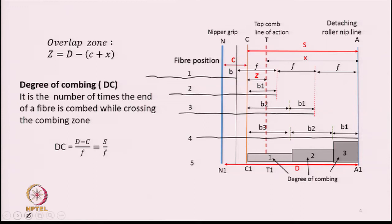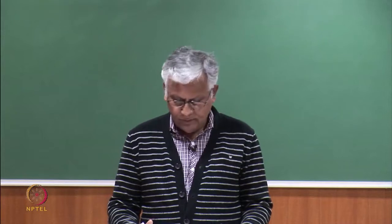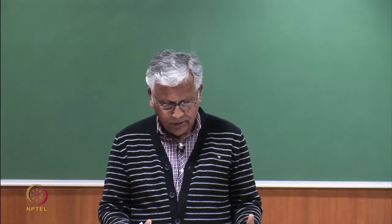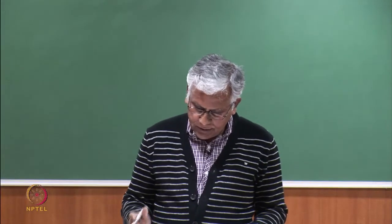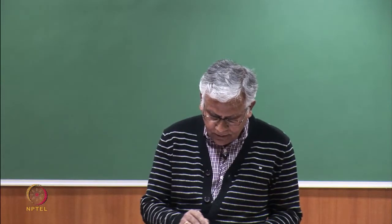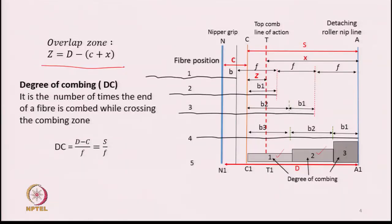To summarize: B1 gets combed three times, B2 twice, and B3 once by the cylinder needles. The rest of the fibre — the tail part — is combed only by the top comb. There is an overlapping zone Z, where Z equals D minus C plus X, representing the zone combed by both the top comb and the cylinder comb.